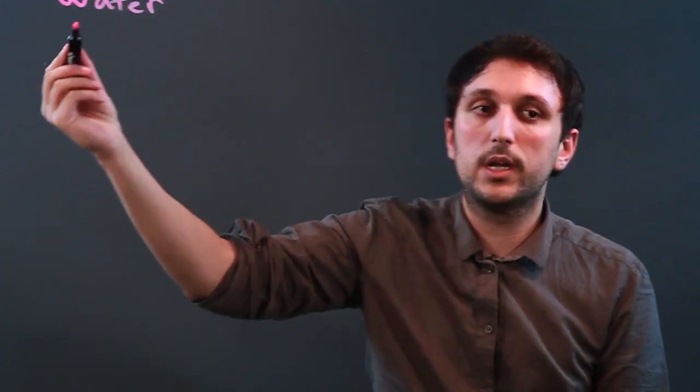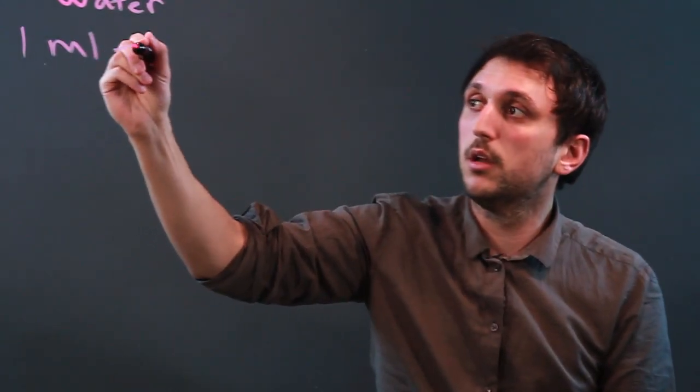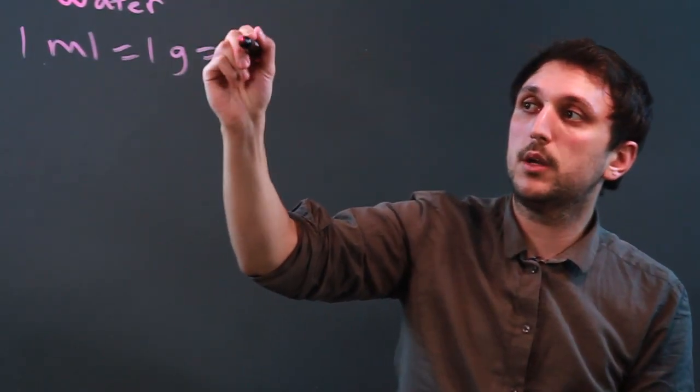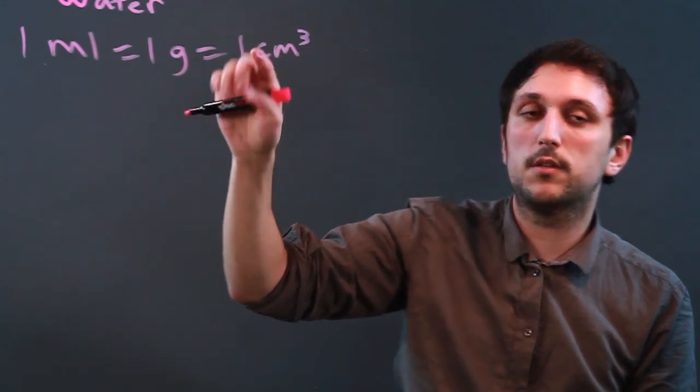But if we're using the same thing like water, then we can do a direct conversion. So with water, we can say one milliliter equals one gram equals one cubic centimeter.